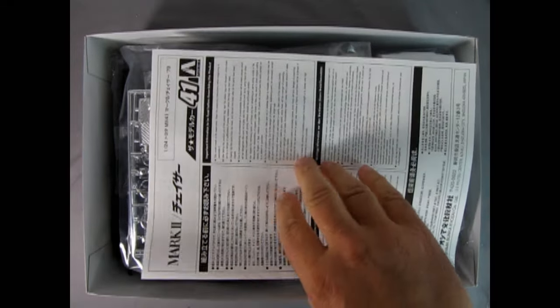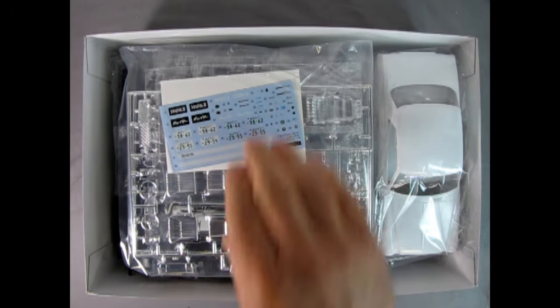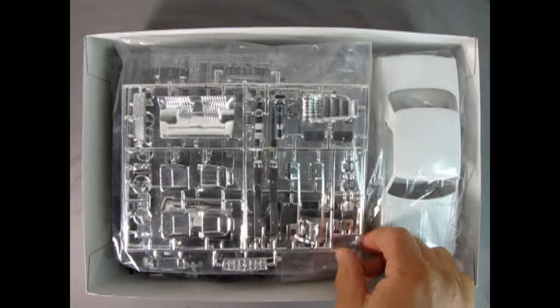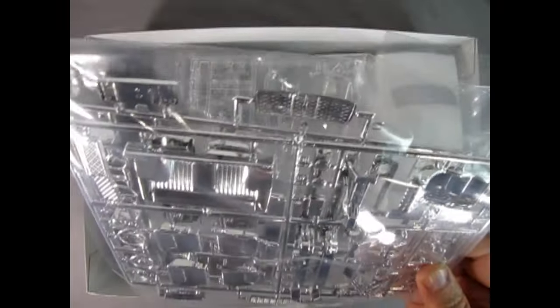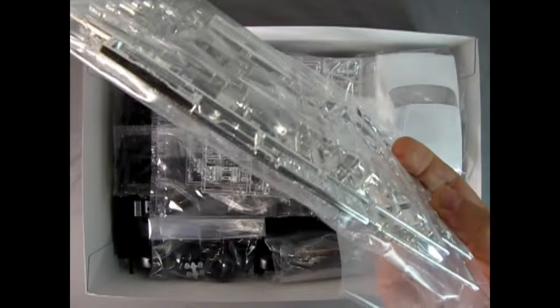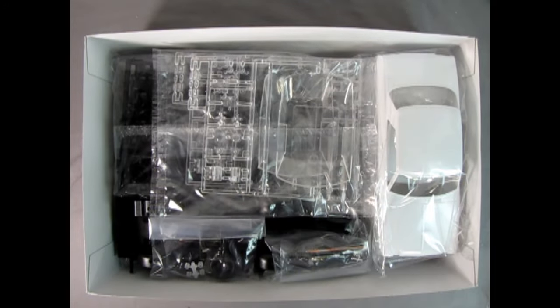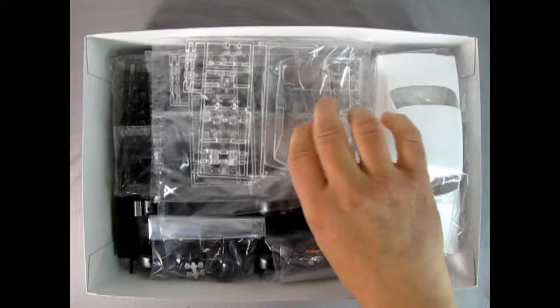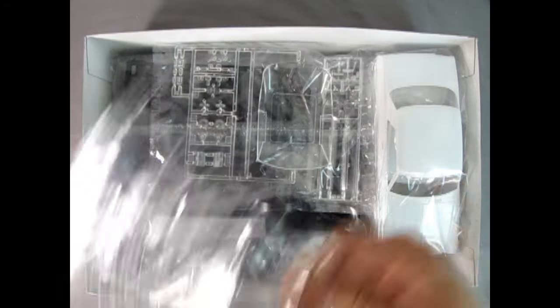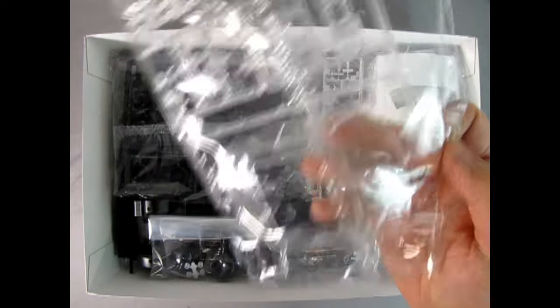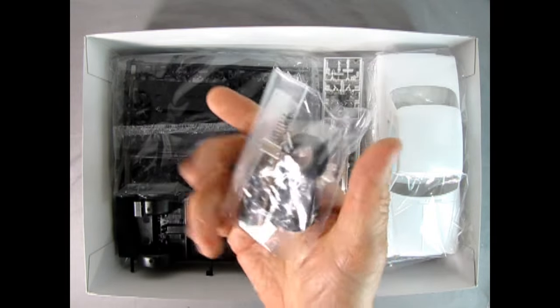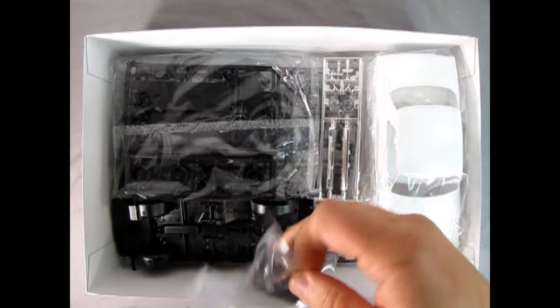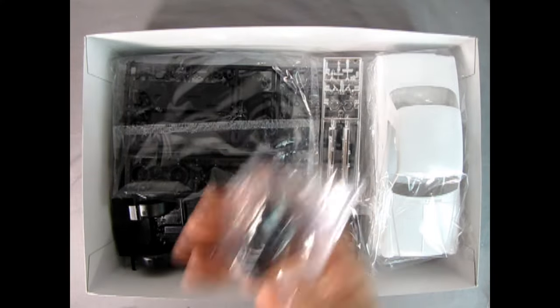So right away we get our instruction sheet followed by the decal sheet. Then look at this, all these chrome components including seats. Now you get two of each part tree in here. So that's so that you can build both cars. We have glass and duplicate glass. We also have a bag of tires and springs and little retainers which Aoshima seems to include in all their kits.